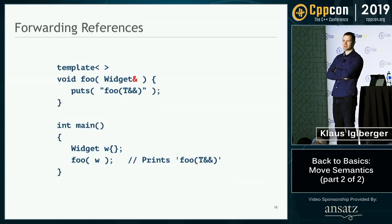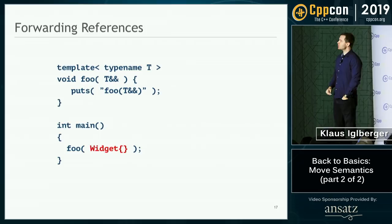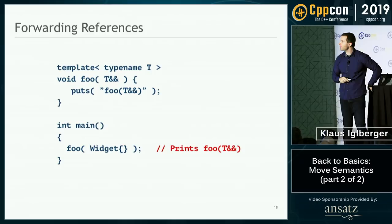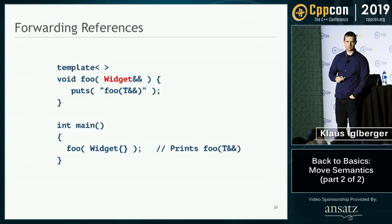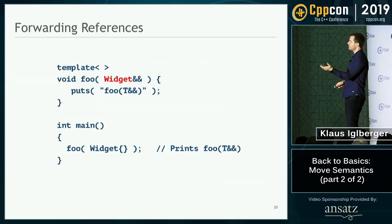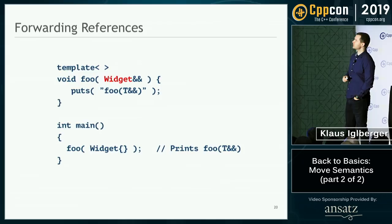What about r-values? Let's pass an r-value — a widget created without a name. Again the function is called and prints foo. This works because now T is deduced to simply be widget. The result is widget&&, which is exactly the kind of parameter needed to pass an r-value widget — it fits perfectly.